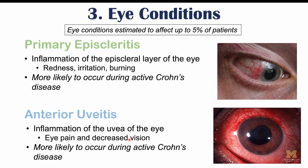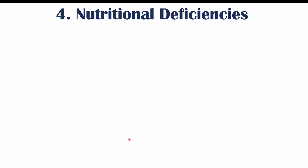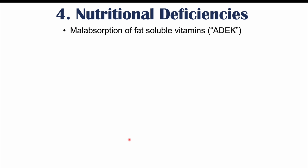Another important category is nutritional deficiencies. Because of inflammation in the gastrointestinal system, there can be issues with absorption of particular nutrients — particularly fat-soluble vitamins. Vitamins A, D, E, and K, remembered by the mnemonic ADEK, are absorbed in the terminal ileum, which is where most of the inflammation in Crohn's disease occurs. As a result, malabsorption of fat-soluble vitamins is common.